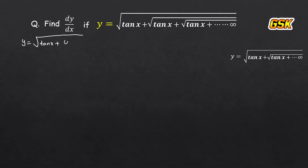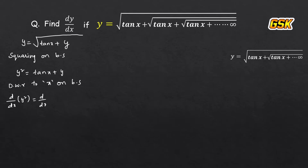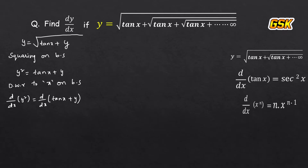According to the question, we write y. So removing the outer square root by squaring on both sides, squaring on both sides gives y squared equals tan x plus y. Now differentiate with respect to x on both sides. So d by dx of y squared equals d by dx of tan x plus y. Here, d by dx of y squared uses the x power n formula: n into x power n minus 1.